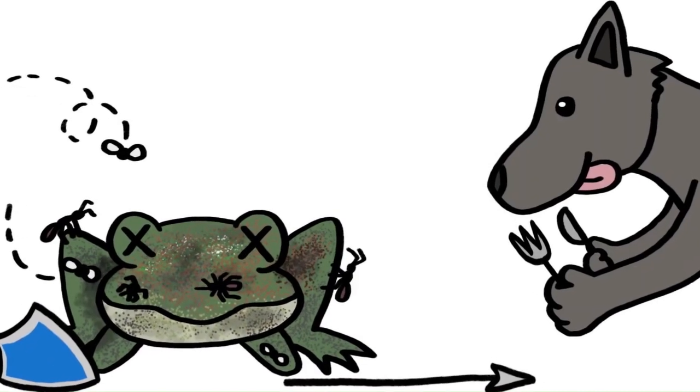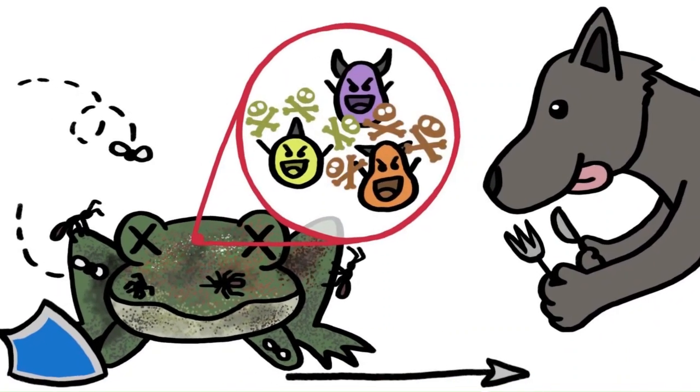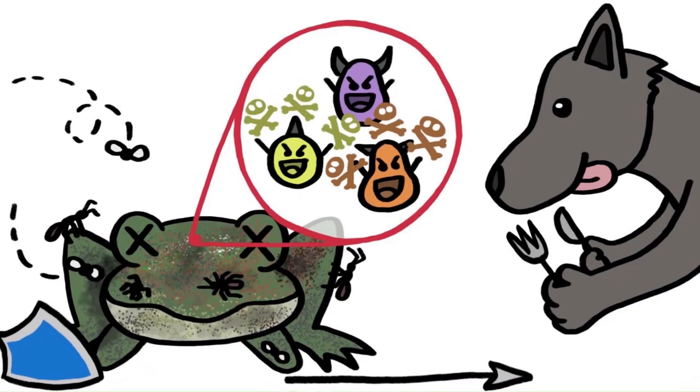To deter bigger carnivores in search of a meal, some feasting microbes produce toxins like anthrax and botulinum, tiny doses of which are fatal to much of the animal kingdom.